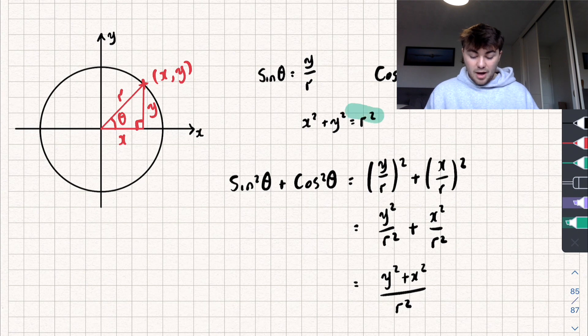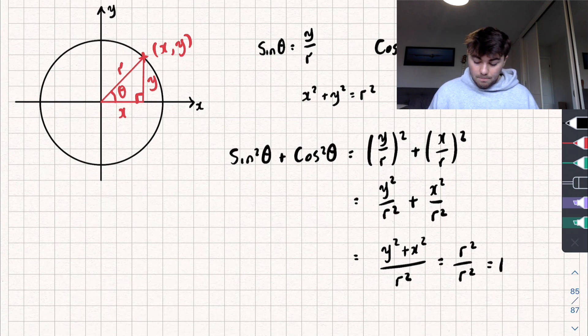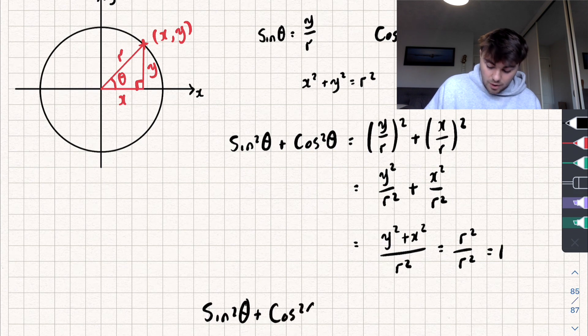And using Pythagoras, we could say that x squared plus y squared is equal to r squared. So y squared plus x squared is also equal to r squared. And we get that that's equal to r squared over r squared, which must be equal to one. And so we've shown that sine squared of theta plus cos squared of theta is equal to one.